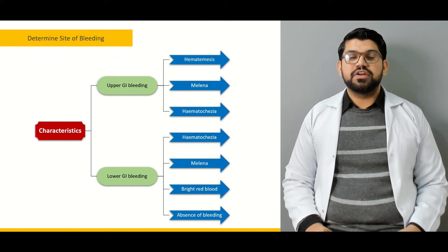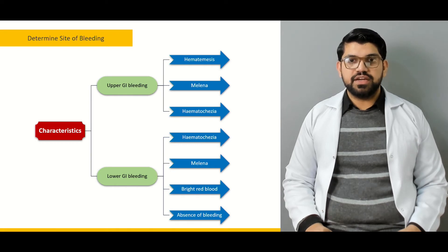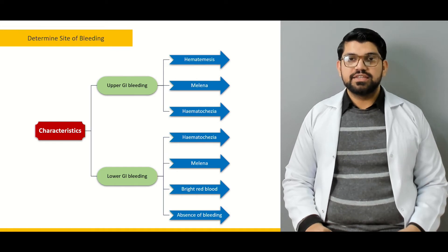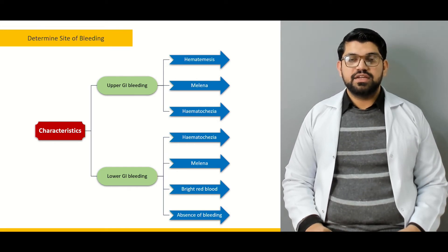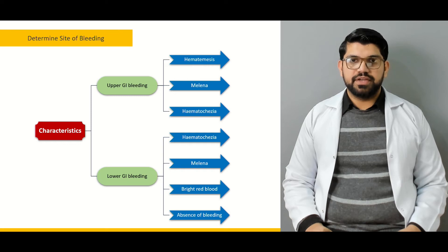Next would be determination of the site of bleeding — how to differentiate whether the patient is having a lower GI bleed or upper GI bleed. There are a few differentiating points. For example, melena is more diagnostic of upper GI bleed, as compared to hematochezia — fresh blood — which is more related to lower GI bleed.